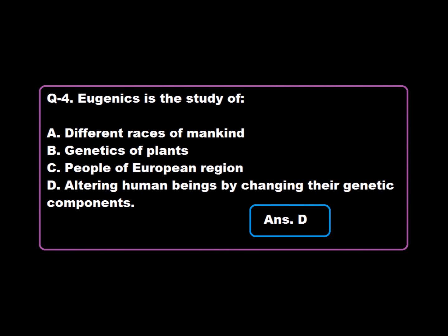Question 4: Eugenics is the study of — Option A: Different races of mankind, Option B: Genetics of plants, Option C: People of European region, Option D: Altering human beings by changing their genetic component. Option D is correct. Eugenics is the study of altering human beings by changing their genetic component. Hence, Option D is correct.